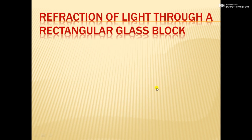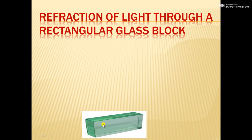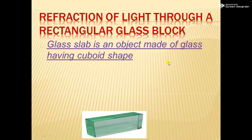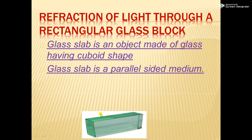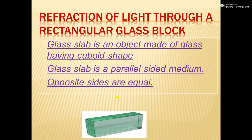First, let us start with what is a glass block or a rectangular glass slab. It is a picture of a glass slab and it is transparent. It is an object made of glass having cuboid shape — three dimensional. Glass slab is a parallel sided medium and it is a transparent medium so light can pass through it, and opposite sides are equal.